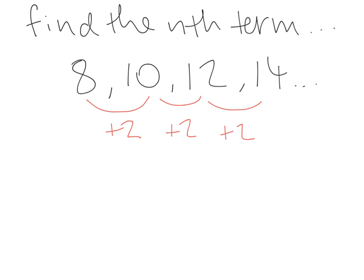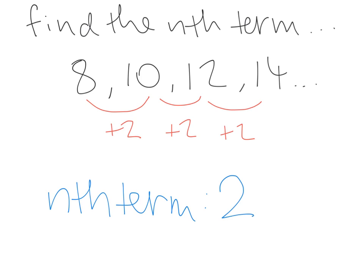There are two steps involved in finding the nth term. Step one is to find the common difference, which in this case is 2, and then we stick on an n — giving us 2n. That's step one. The only other step is to find what's known as the zero term.